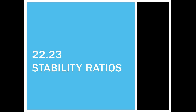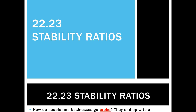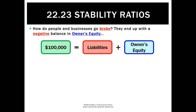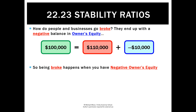Our final category of ratios or financial indicators are stability ratios, and basically they look at the concept of how does someone go broke. We end up with negative owner's equity. If we had assets of a hundred thousand, the accounting equation says liabilities plus owner's equity must equal that number. So if I had liabilities of a hundred and ten thousand, that means I actually owe more for my assets than they are actually worth, and my owner's equity would be negative ten thousand dollars.